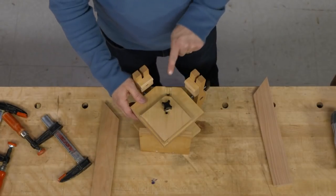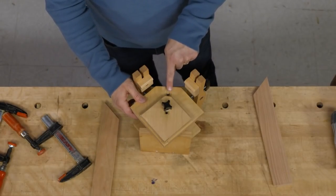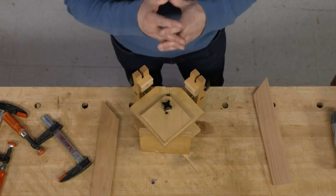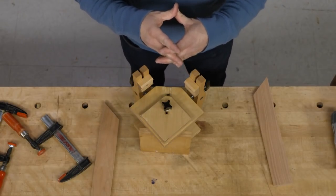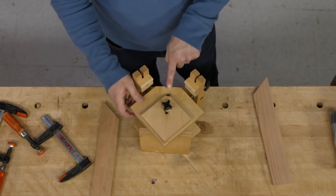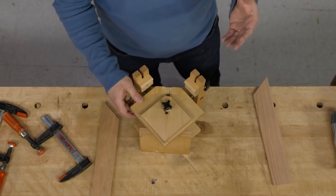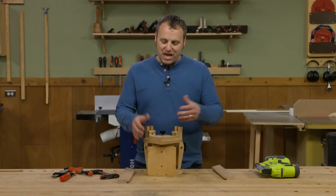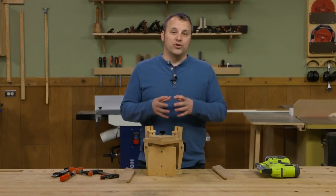That channel where the top block slides in—that's a dado that goes through there. Again, when you apply glue and squeeze that together, any squeeze-out can drip right in there and isn't going to smear around on the bottom face of your frame.